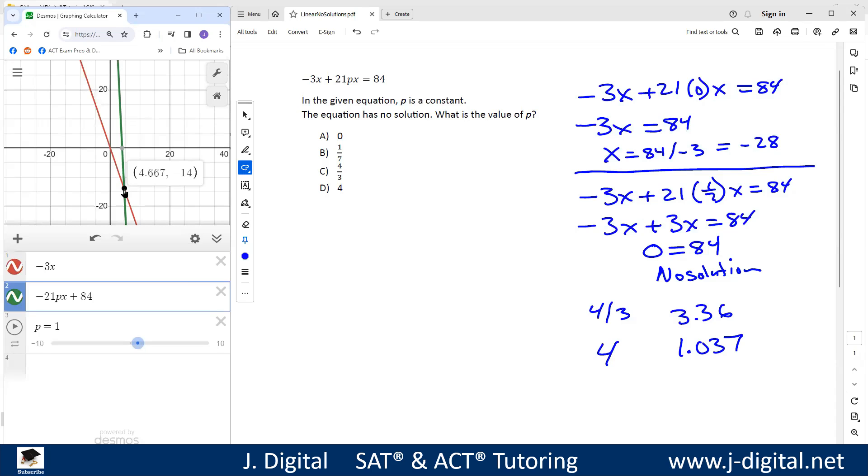And we can see the first one, negative 3x, has a y-intercept of 0. The second one, we have a y-intercept of 84, so they have different y-intercepts. So we just need to have the same slope.